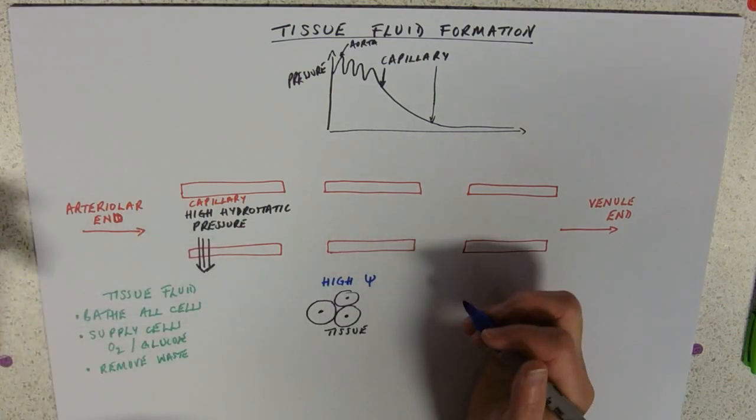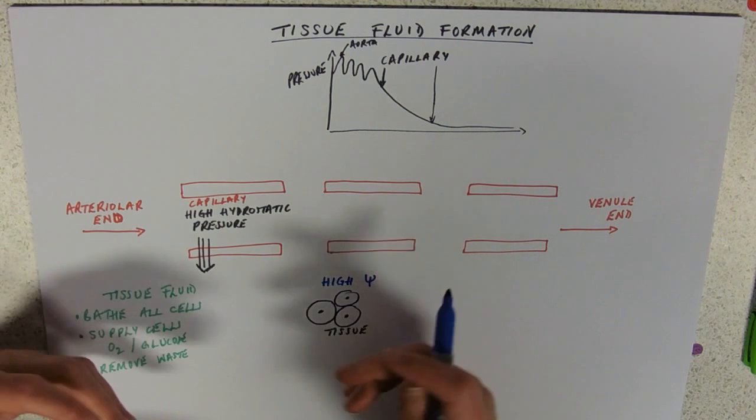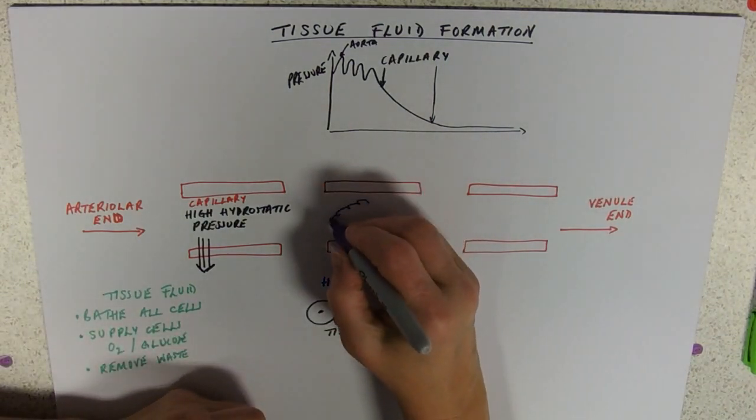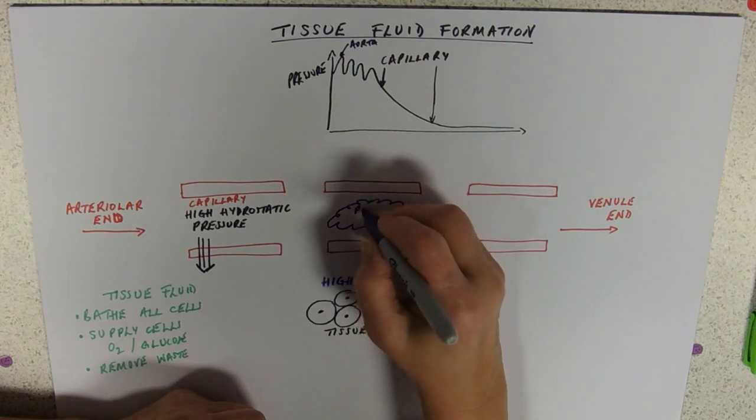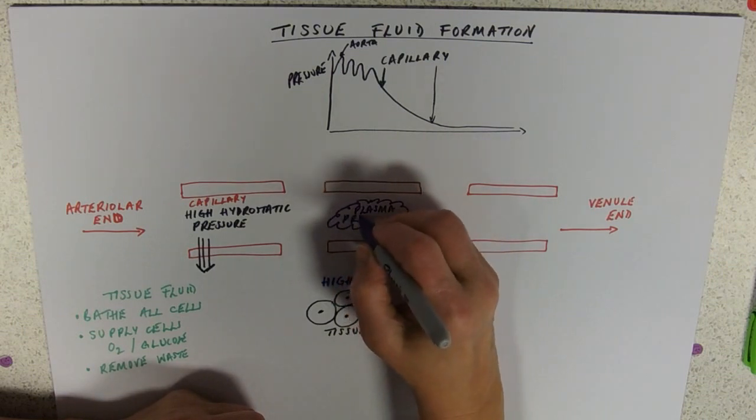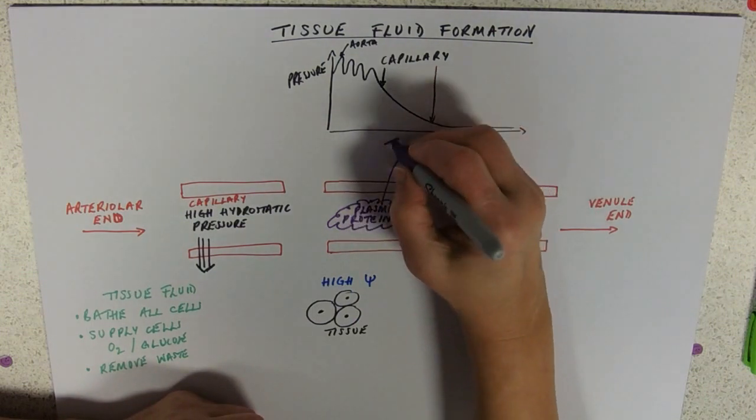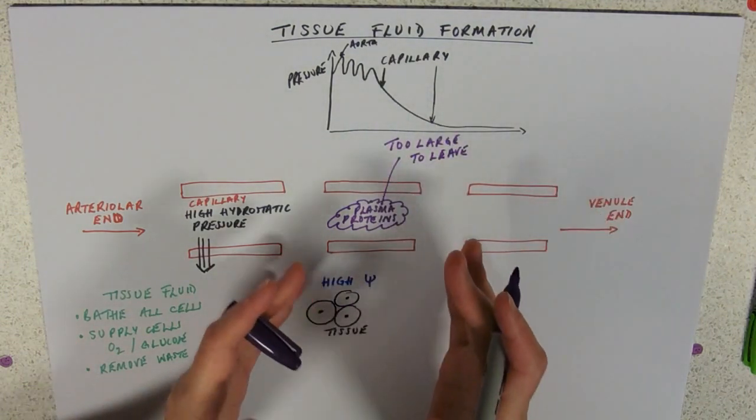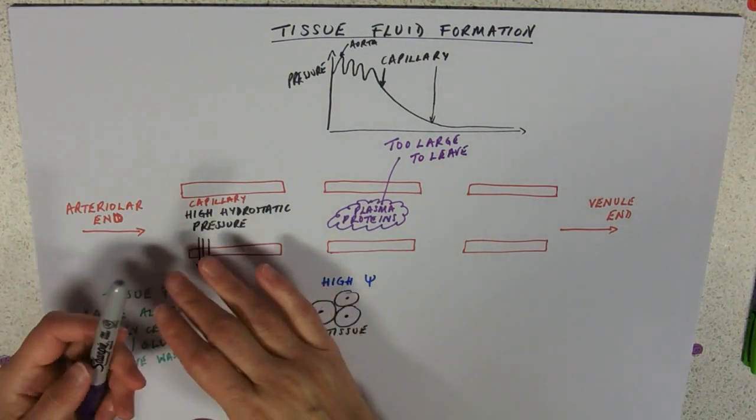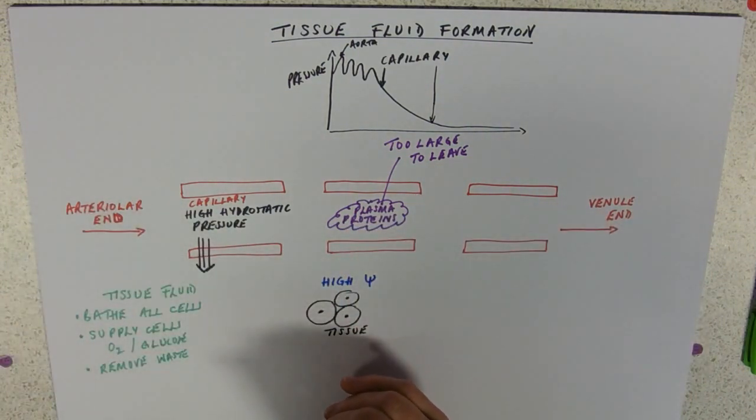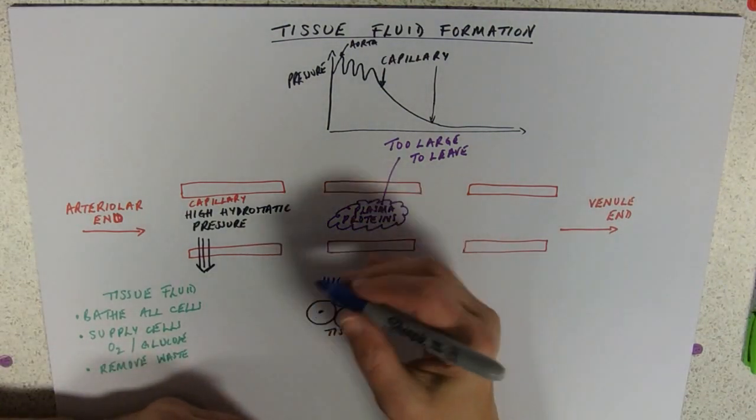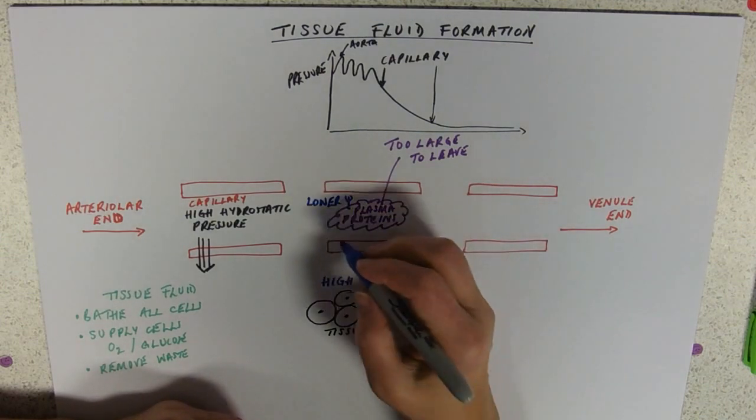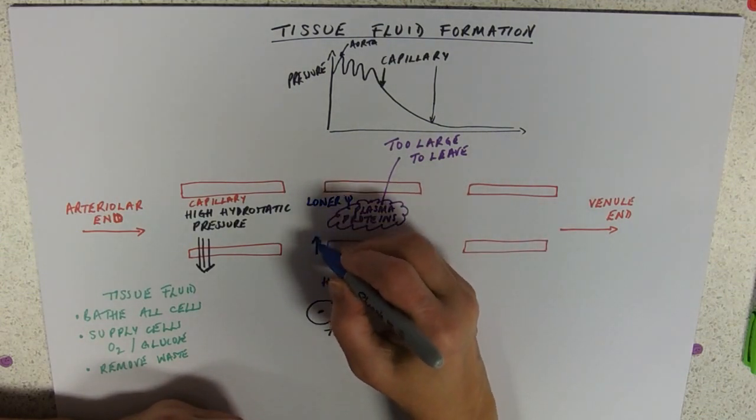Along the capillary there's always going to be this kind of osmotic force in. Although you can force a lot of stuff out, it's got to be small. Inside your blood you have plasma proteins and the bottom line is these are too large to leave. They simply won't fit between the gaps of the endothelial cells. So they stay inside the capillary. They cause blood to have, relatively compared to this, a low water potential. Plasma proteins lower the water potential. So this would tend to cause osmosis.